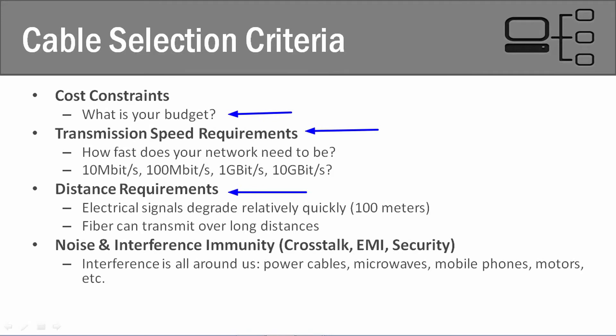Lastly, your fourth concern is going to be noise and interference immunity. We have to think about our concerns with crosstalk, EMI, signal emanation, and signal degradation. We need to determine what type of factors our environment deals with and how it affects our network. When we're talking about interference, I'm talking about power cables, microwaves, cell phones, and even motors like if you have a generator. We need to think about all of that for crosstalk and EMI.